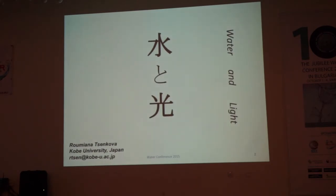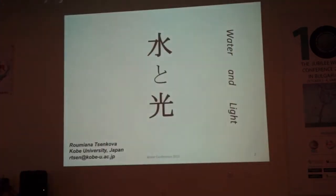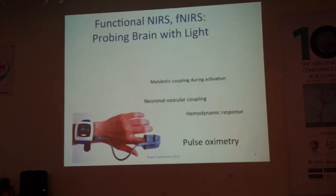I'll start with this slide because this is what aquaphotomics is all about. Aqua is water - this is the first Japanese character, which sounds 'mizu'. And the second character is light, which is 'hikari' in Japanese. So, aquaphotomics: water and infrared spectroscopy.